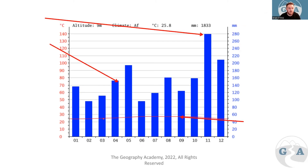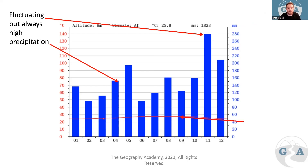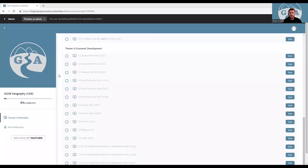This is a tropical rainforest climate graph. We can see a fluctuating but almost always high precipitation — the maximum in this region can be up to 280 millimeters per month on average. The temperature stays very consistent, remaining between approximately 20 and 30 degrees Celsius throughout the year.